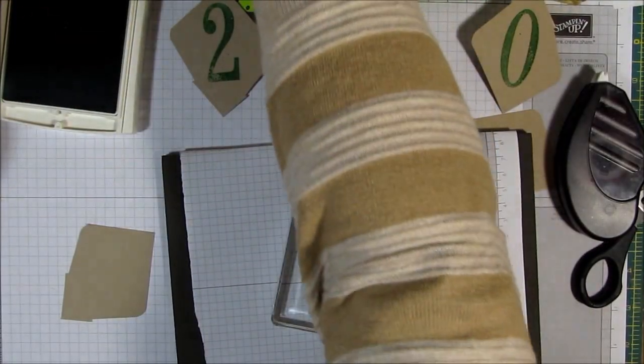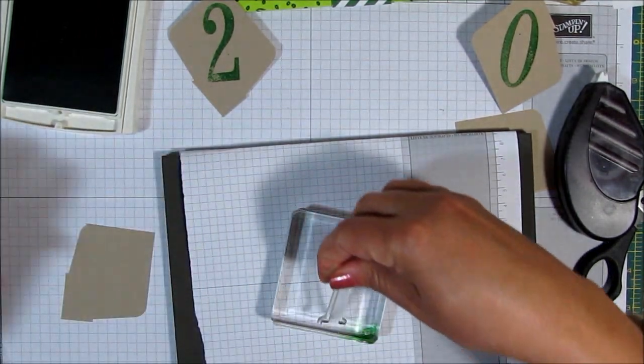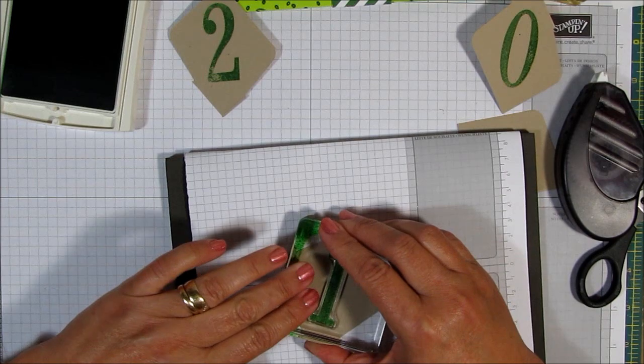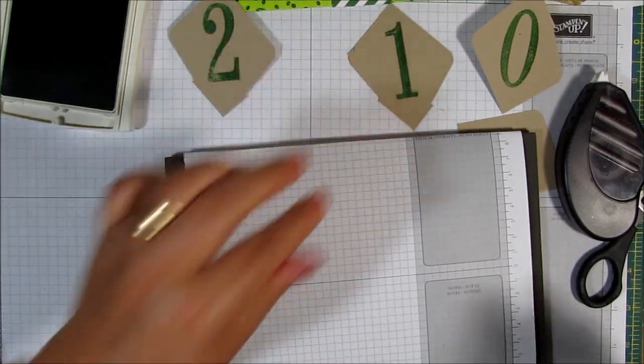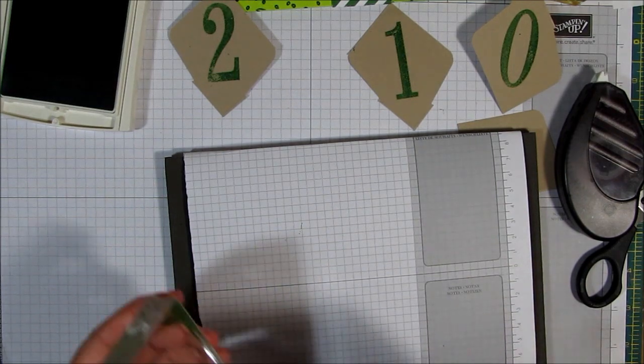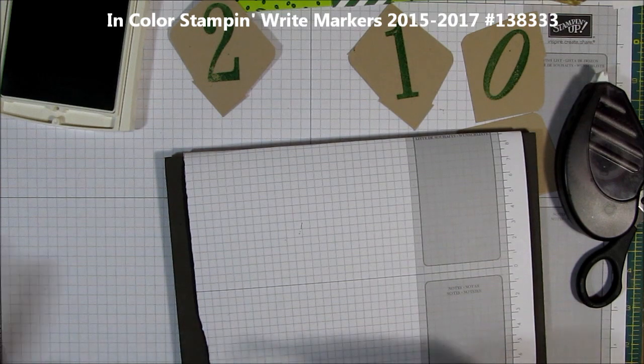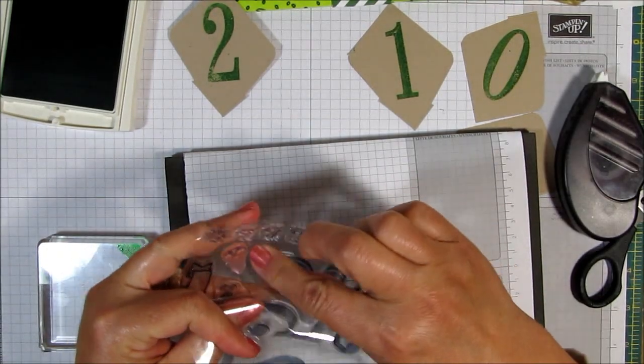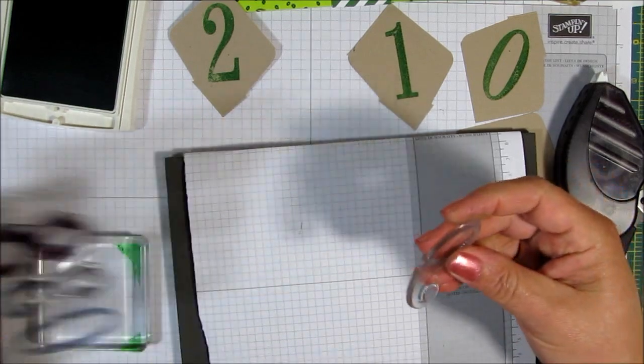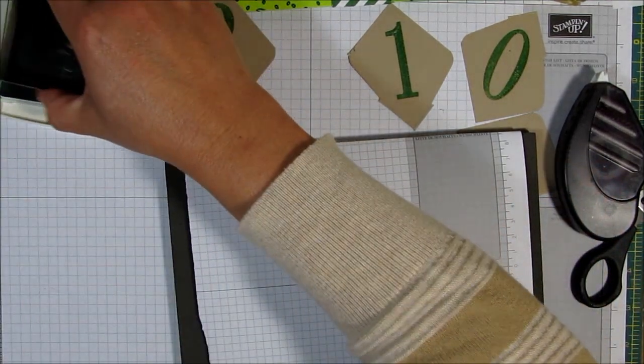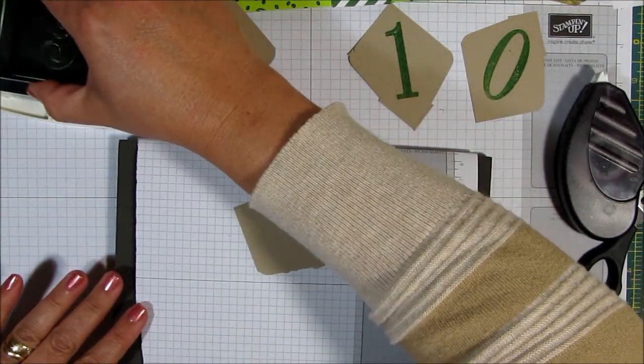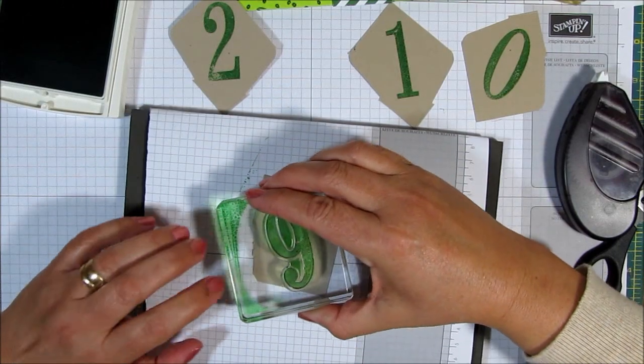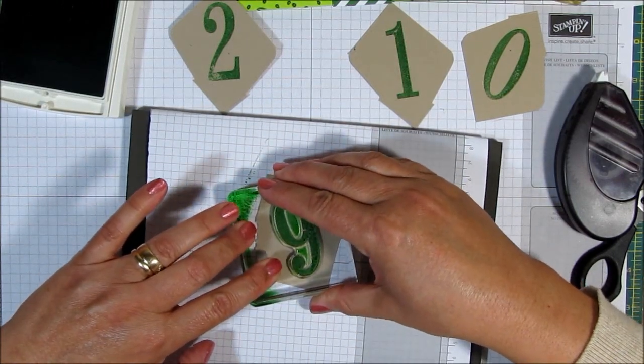And then you want to do the one. And then, now if you have the Stampin' Write markers for the end colors for last year, you could do a little bit of filling in if you want to. And the last number is a six. Now that six can also be used as a nine. I was looking for the nine. I'm thinking, oh, there it is. It's a six and a nine. All right. So I have another piece of card stack here. And I'm going to be, oops. Sorry about that. This is my six.